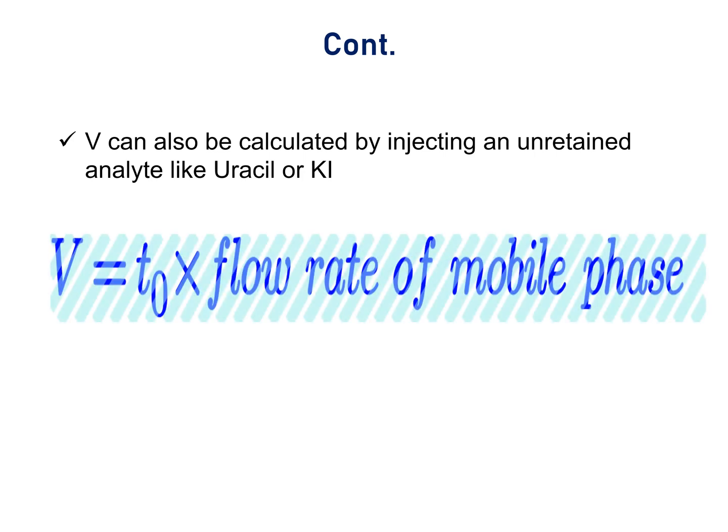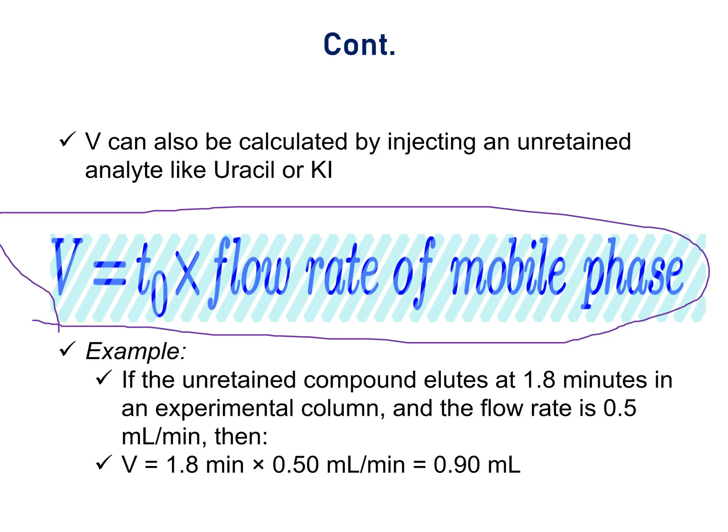It is calculated by the formula V equals T0 times flow rate of the mobile phase. Let us consider we have to calculate void volume where T0 has been given and flow rate has been given in any column. Let us consider dimension of the column is 150 by 2.1 mm. Then void volume will be 1.8 times 0.50, that is 0.90 ml. Now you can calculate void volume using this formula also in any HPLC method development for any column.